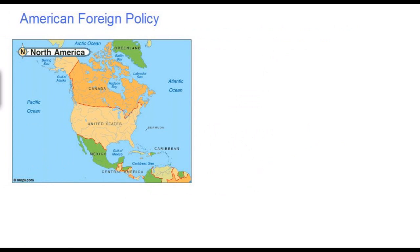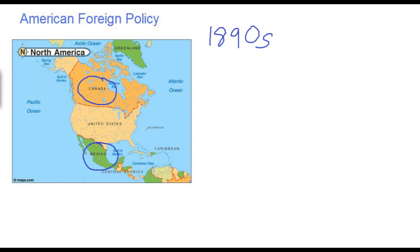American foreign policy prior to the 1890s had been focused primarily on affairs within the boundaries of the United States itself — defending against foreign invasions, resolving conflicts with immediate neighbors like British Canada, Spain, and later independent Mexico, ensuring the United States would be a strong and united nation as Americans expanded westward across the Mississippi River, and ultimately enforcing the Monroe Doctrine.